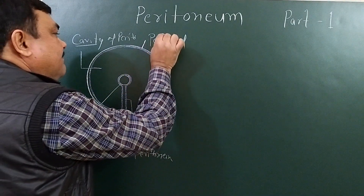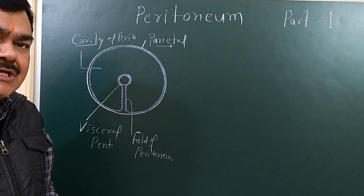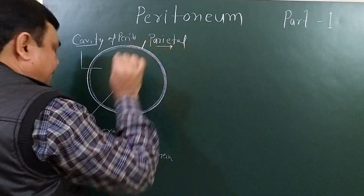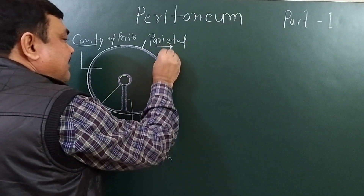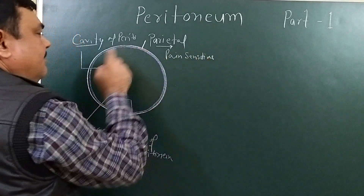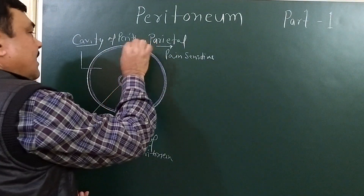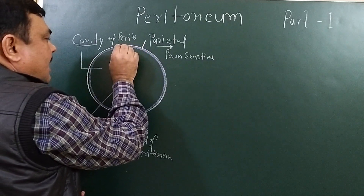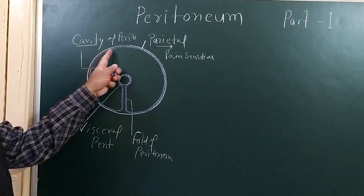First of all, parietal peritoneum. This parietal peritoneum develops from somatopleuric mesoderm of the lateral plate. It is pain sensitive, because its nerve supply is from the same nerves which give supply to the wall of the abdominal cavity — that is, somatic nerve supply, same as the wall of the abdominal cavity.